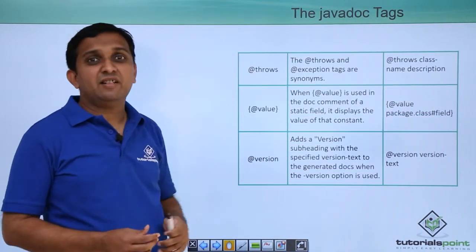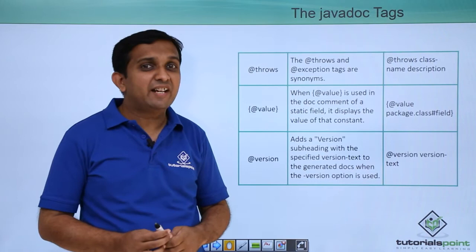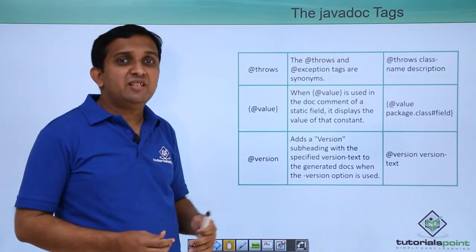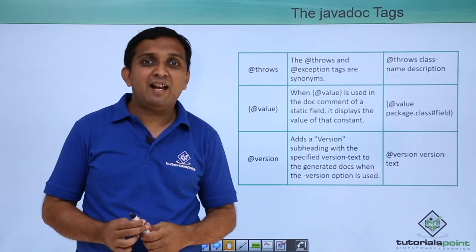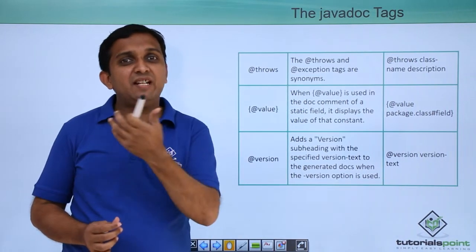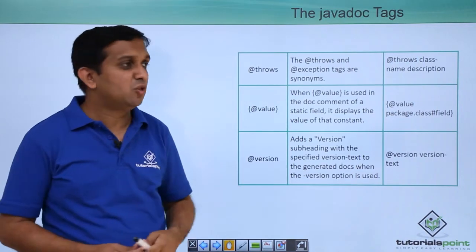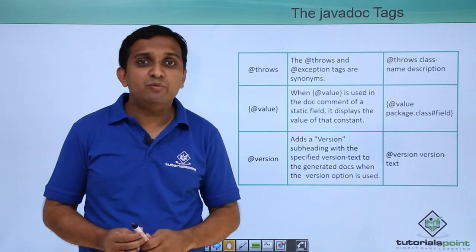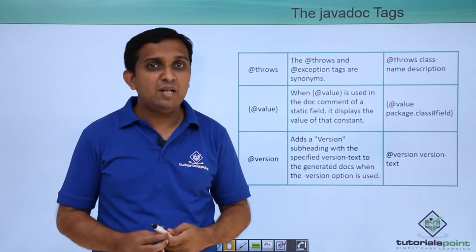The remaining tags are @throws tag is there. Throws is as good as exception tag. The job is same. @value is there. Suppose I have some static field in my class and that field is having some initial value and I want to mention that value in my javadoc then I will make use of @value tag. @version will give you the version from which the current class or method is available.